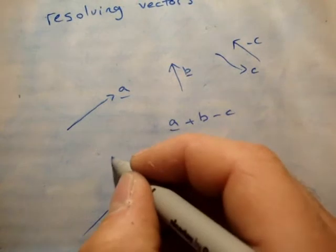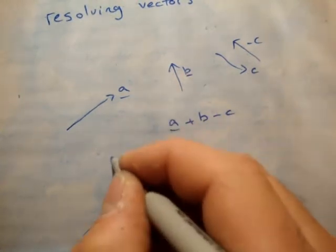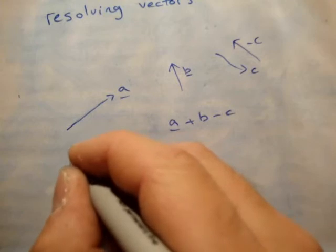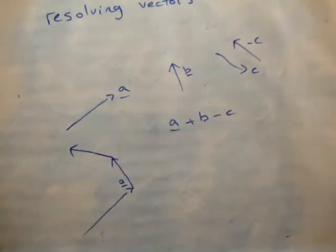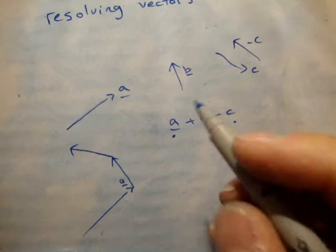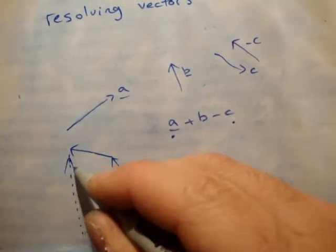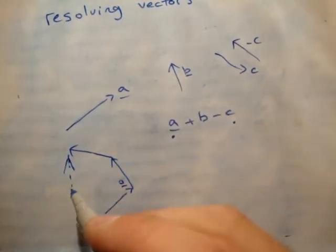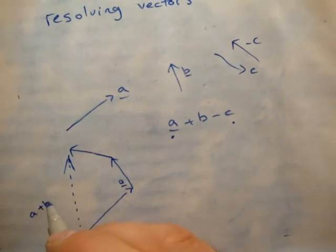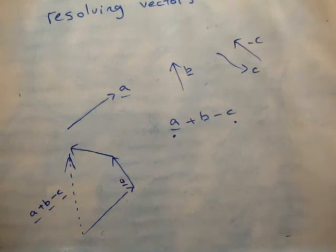I put the tail of minus C at the head of B and draw that. To get your resultant vector, you go from the tail of the first one to the head of the last one and draw your arrow. So this would be A plus B minus C — that's a quick recap on adding and subtracting vectors.